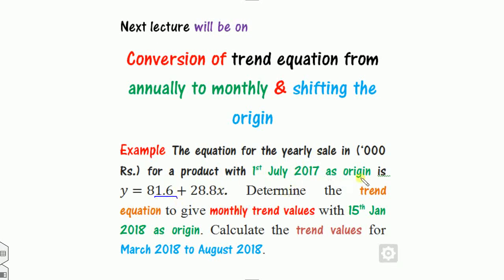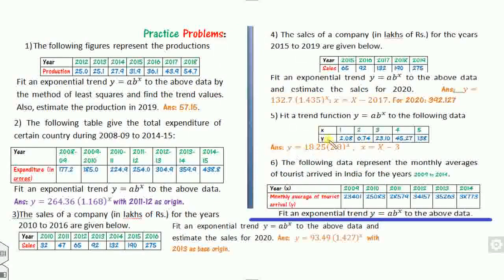For example, the trend equation for yearly sales is given — find the trend equation that gives monthly values. What will happen if we want to find values for March 2018, August 2018, or for a particular date like 15 August 2018 as the origin? Before that, you should be able to solve this non-linear trend equation carefully. I have given six problems for you to solve and send your answers in the comments. If there is any doubt, feel free to ask at any time. Best of luck students, thanks.